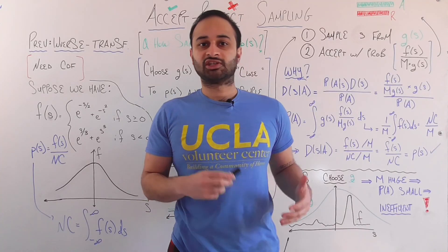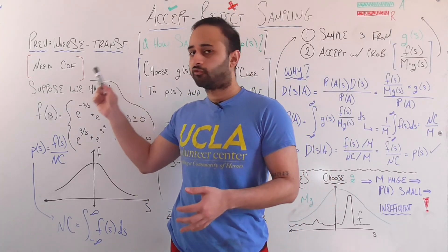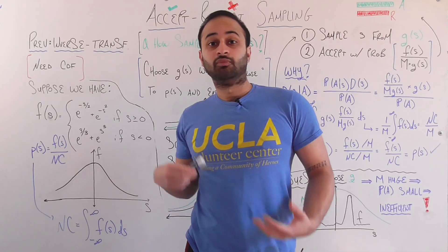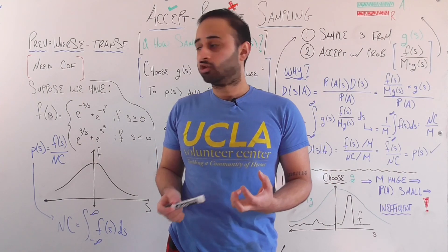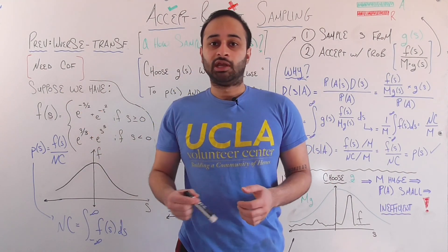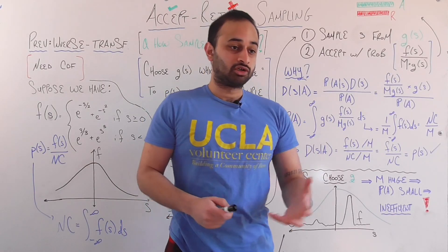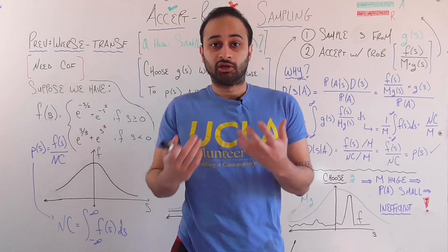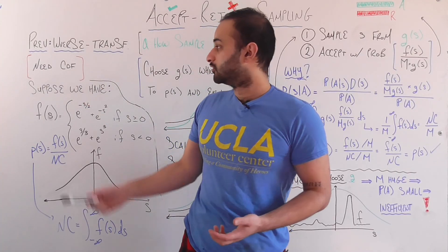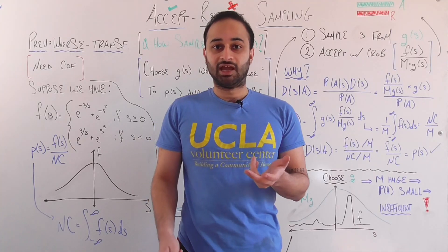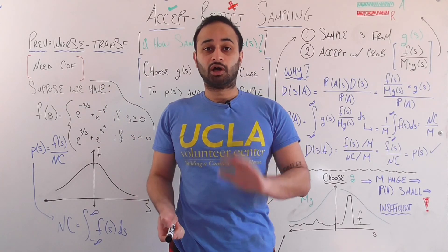The last video we made on sampling from a distribution was a little while ago — I'll post that video in the description — and it was called Inverse Transform Sampling. That was a method to sample from some distribution. It's a cool method, but the biggest issue with it is that we explicitly need the cumulative distribution function, the CDF, in order to do this method. And for a lot of real-world distributions, either those you're using in your research or your job, or ones you're forming yourself, you're simply just not going to have access to the CDF. And even if you do, another step in Inverse Transform Sampling is to invert the CDF, and that might be difficult even if you have it. So this method, Accept-Reject Sampling, is solving a lot of those issues.